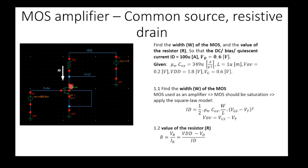Now we can start to calculate. You can use a very primitive way like paper and pen, or C programming in VS Code, or Python. I will use Python to calculate our width and our resistor. Let's go to the calculation.